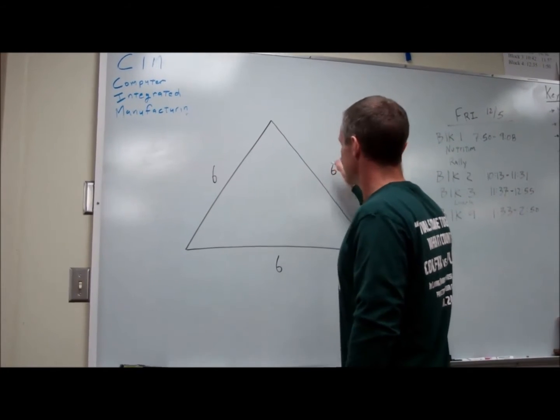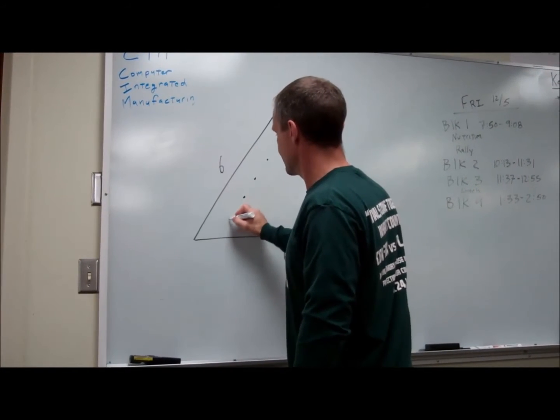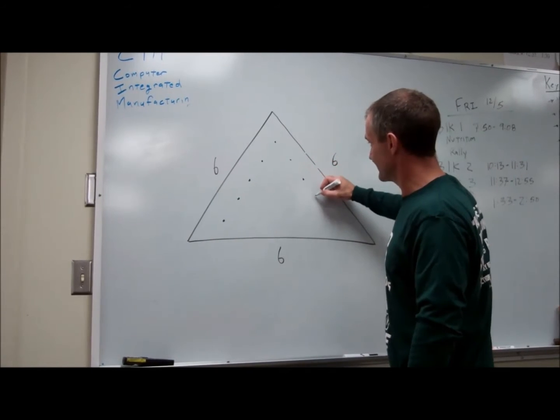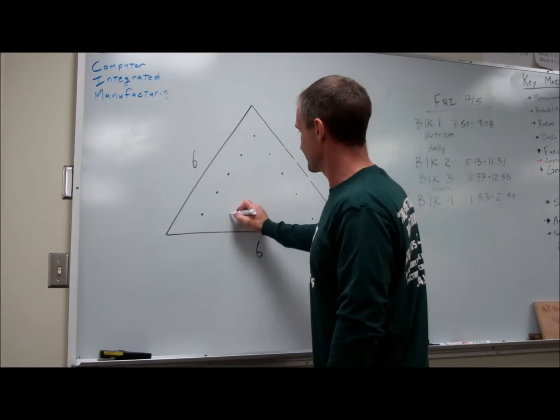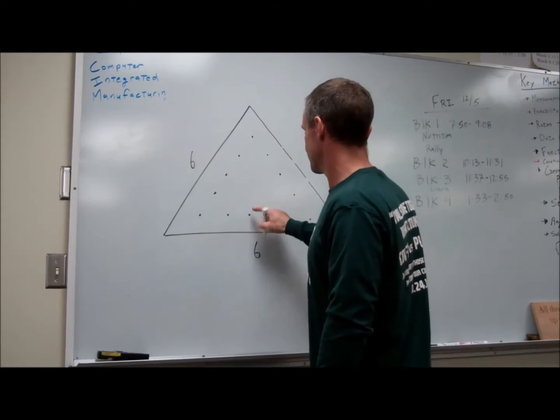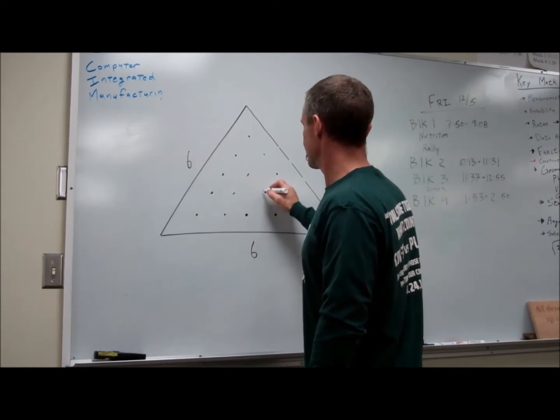And then there are five holes going at a diagonal down this way and they're equally spaced, and then five holes going at a diagonal this way and then five going this way. So that's kind of the whole layout.